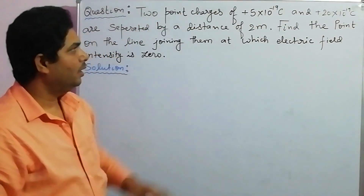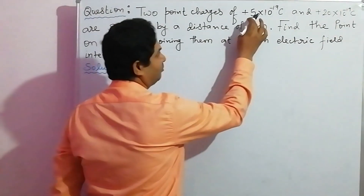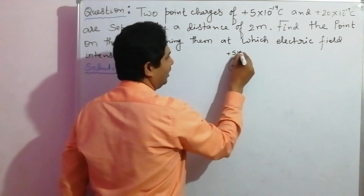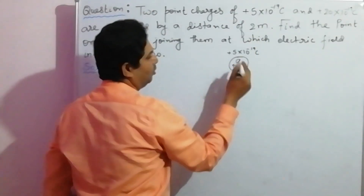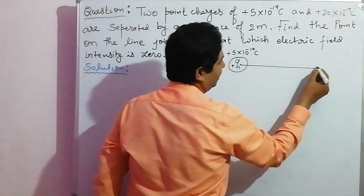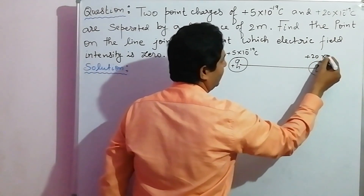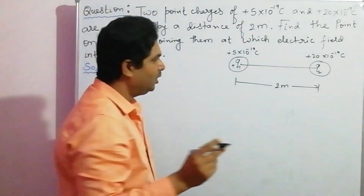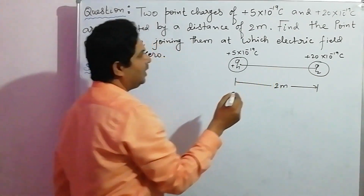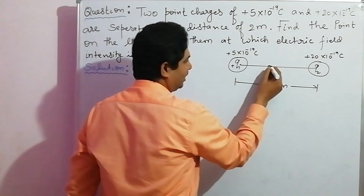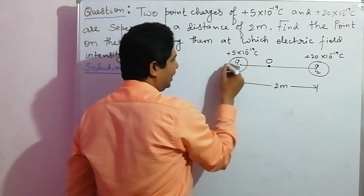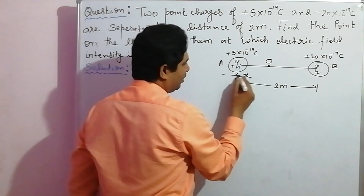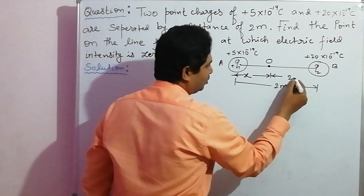The question says you have two charges. Charge Q1 has value plus 5 times 10 to the power minus 19 coulombs, and at a distance of 2 meters you have another charge Q2 with value plus 20 times 10 to the power minus 19 coulombs. The question asks where is the point at which electric field intensity is zero. Let this point be O, point A and point B on either side. The distance AO is X, and the remaining distance is 2 minus X.